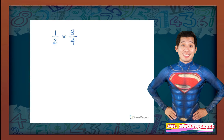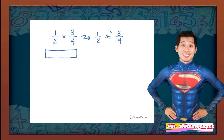Now let's multiply one half times three-fourths using the model method. We'll purely use the model method this time. So one half times three-fourths — let's change this to the statement 'one half of three-fourths.' Let's say I have one hole and I'm using a rectangular hole. But of this one hole, I'll only use three-fourths. So for three-fourths, let's divide the hole into four equal parts. Three-fourths of that one hole is equivalent to three equal parts — the shaded part. This is the three-fourths.